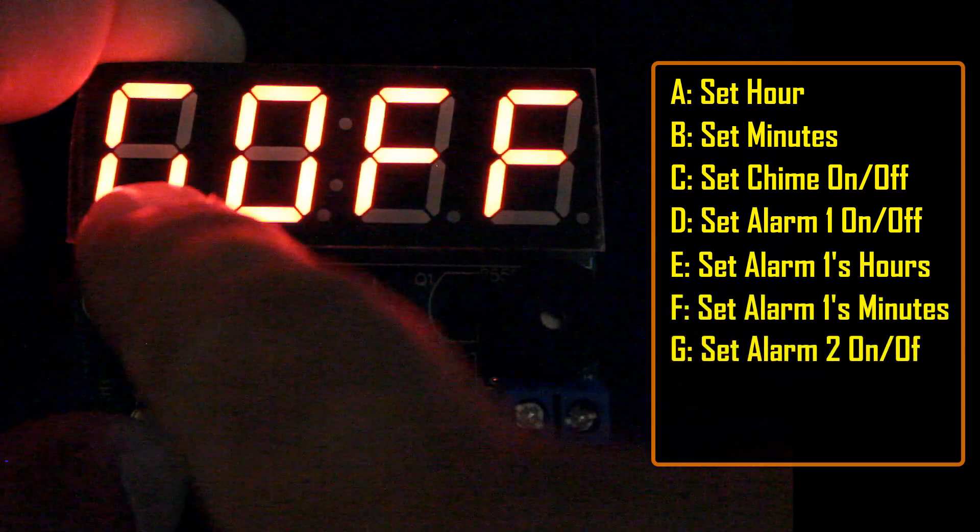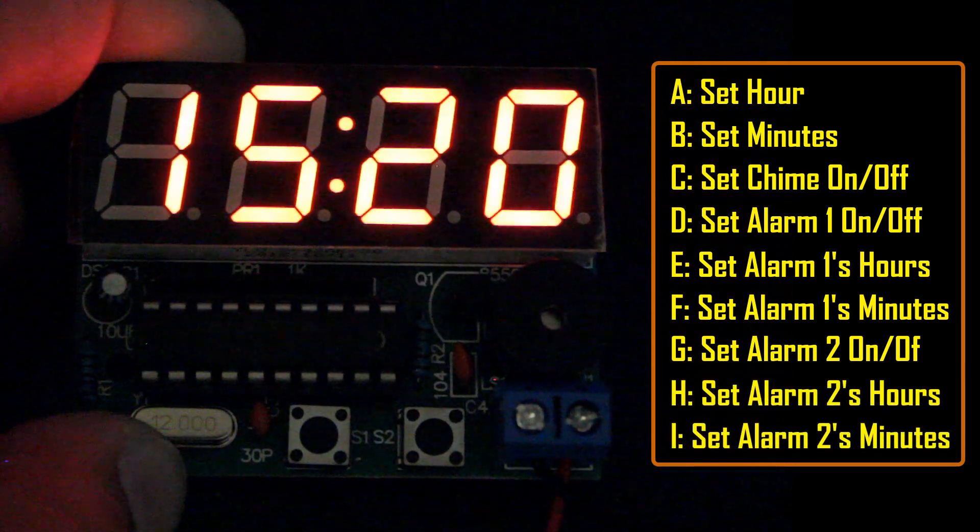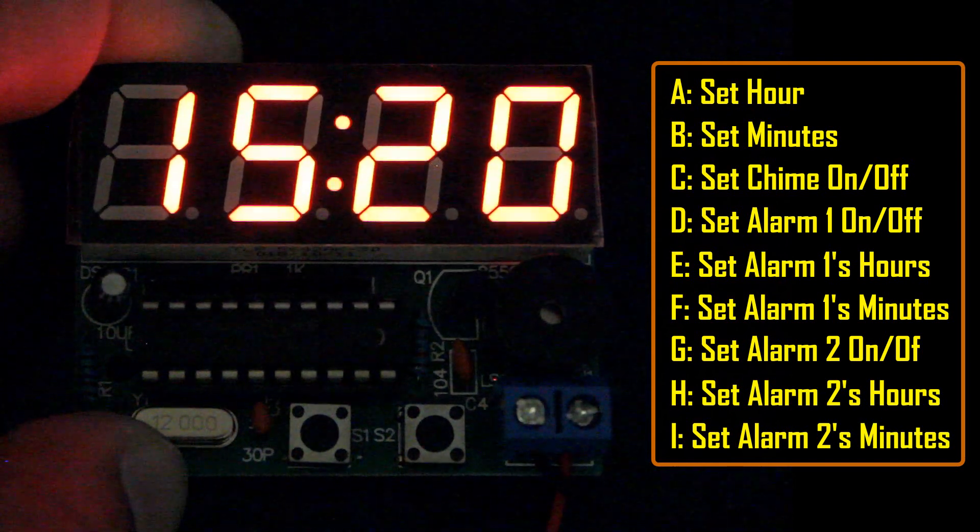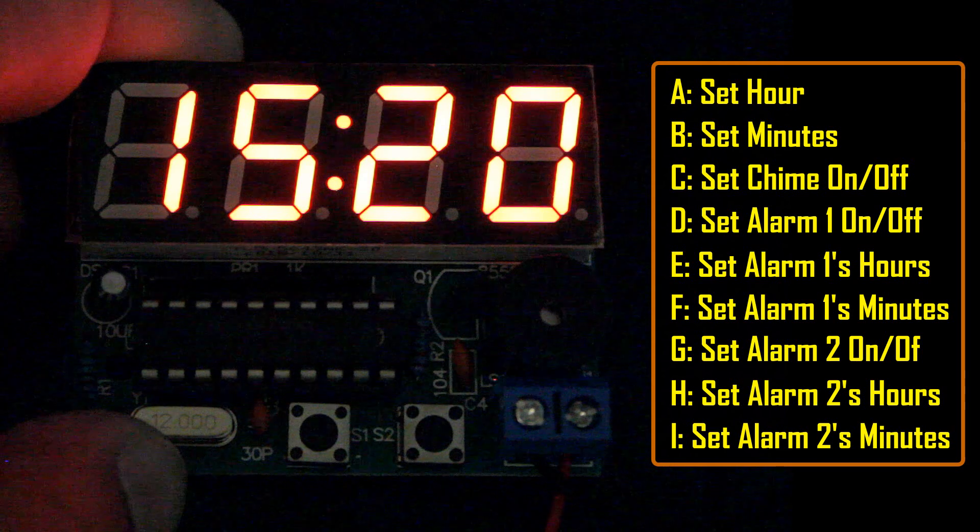Then G is to set the second alarm on or off. And H and I for the hour and minutes of the second alarm. When the alarm starts beeping, you need to press the B2 button to turn it off.